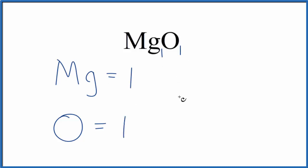So we have a total of two atoms in MgO. Sometimes you're asked to find the number of atoms in one mole of MgO.